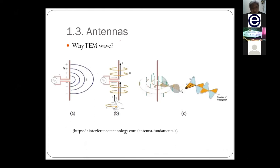At the far field region, the electric field is 90 degrees away from the magnetic field, and both are perpendicular to the propagation direction Z. This kind of field — where E and H fields are perpendicular to each other and both are perpendicular to the propagation direction — is called a transverse electromagnetic (TEM) field. The electric field polarizes vertically and the magnetic field polarizes horizontally; when they join together radiating outward, they form the TEM wave.